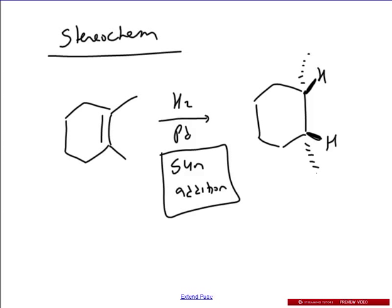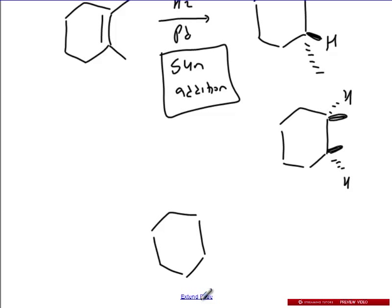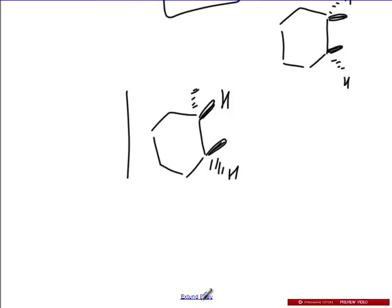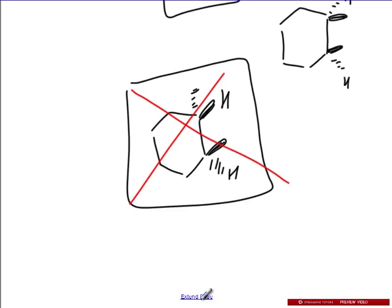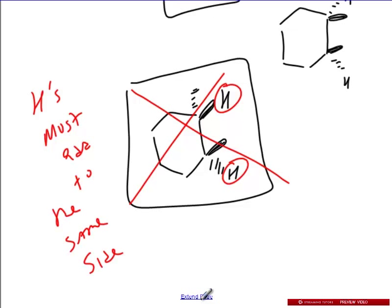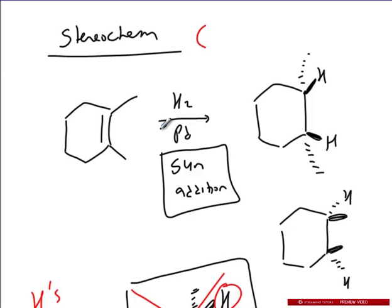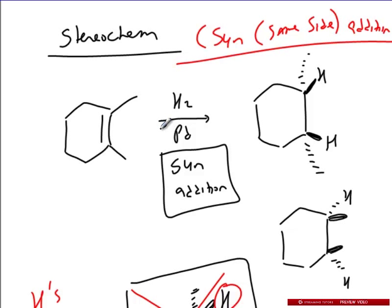So methyls in the back, methyls in the back. Or the H could have come in from the back and then the methyls are on the wedge. So these are the two possible answers. But what never happens is where you have an H add from a wedge and then another one from the back — that would never happen at all. This one does not occur. The Hs must add to the same side. That's the only way they add. So the stereochemistry is what's called a syn, or same side, addition. That's the key for this reaction.